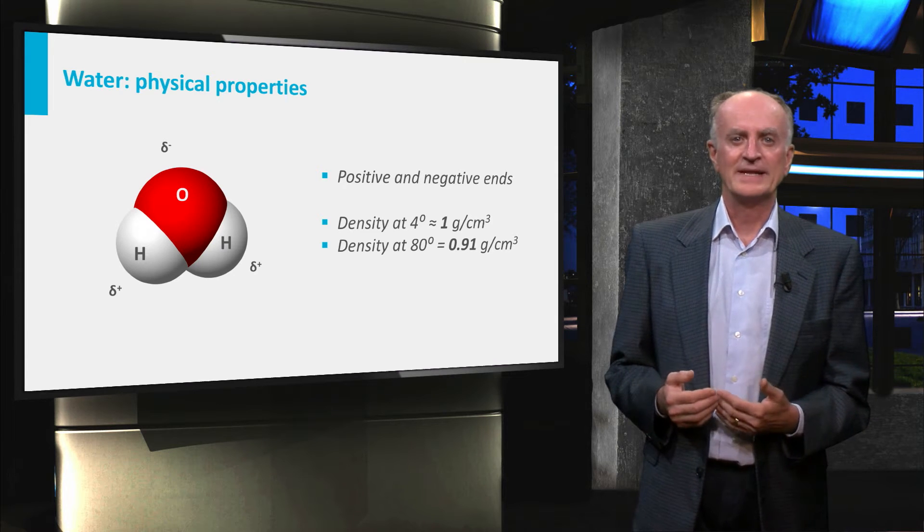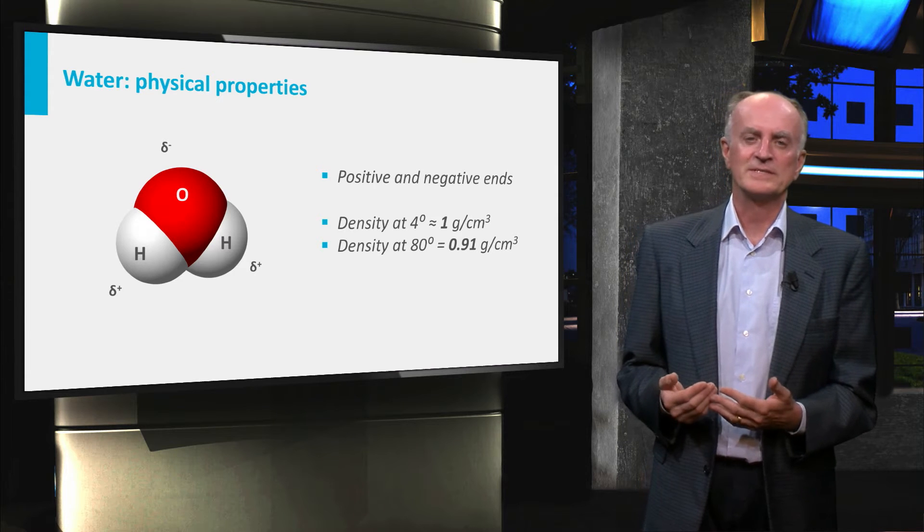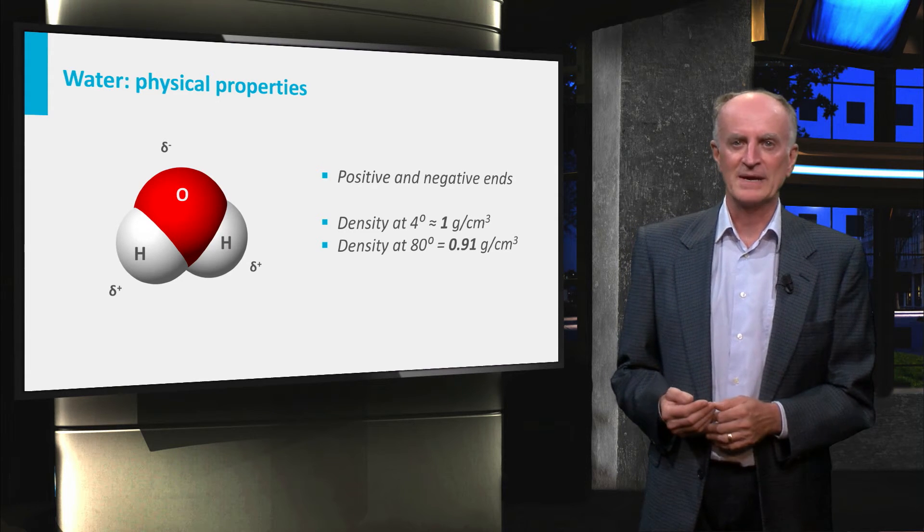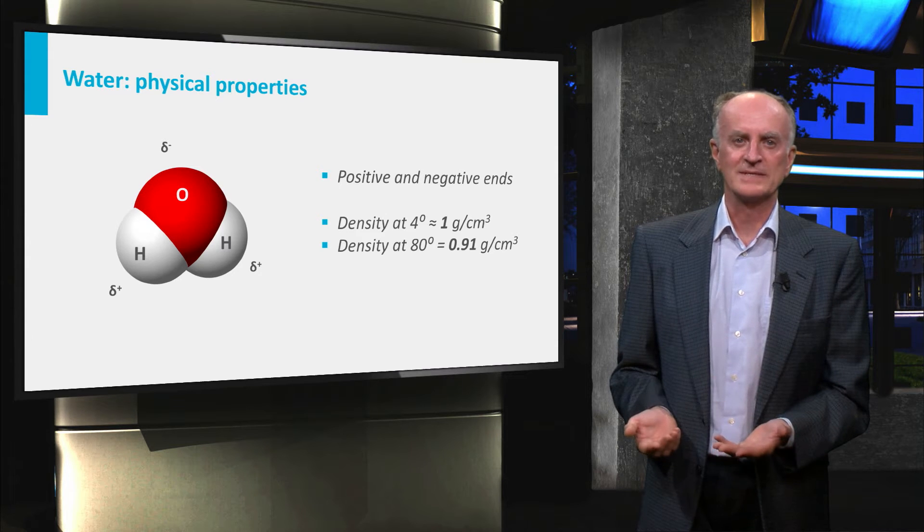Things are different, however, at high temperatures. For instance at 60 degrees the density of water is 0.97 g per centimeter cube, which is a big enough difference to cause vertical movements in thermal systems.